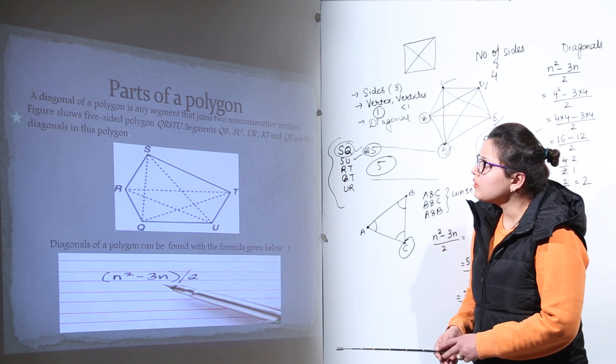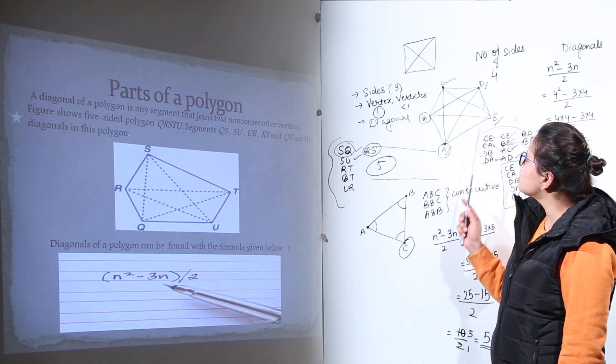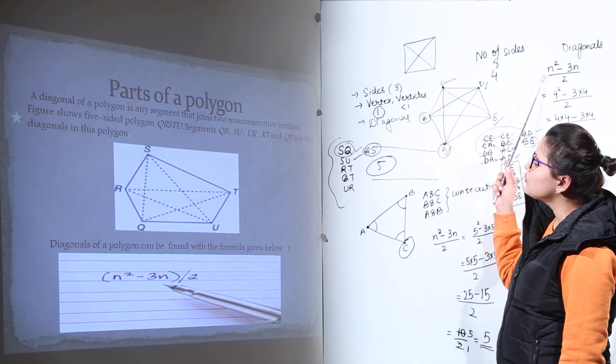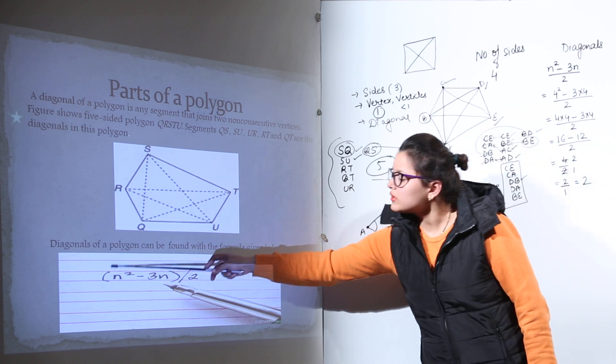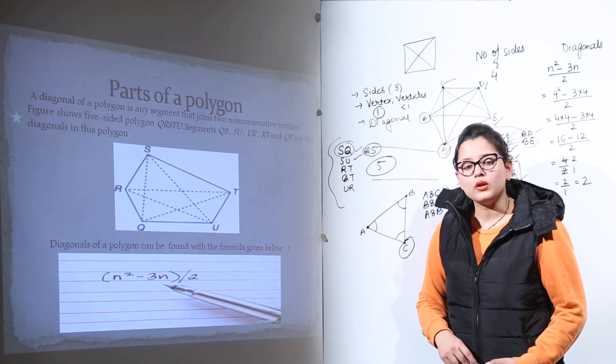So this is how we calculate the number of diagonals for any polygon. You can have any number of sides given, you put it into the formula and solve it further to get the number of diagonals possible in any polygon.